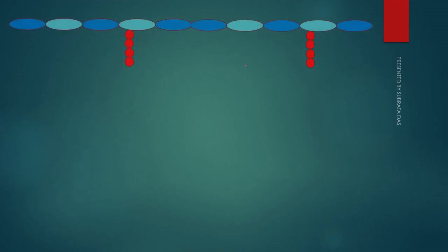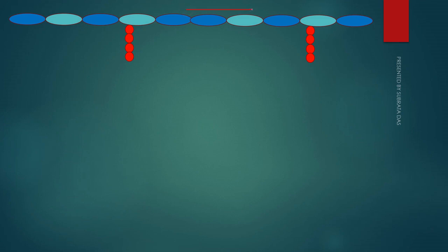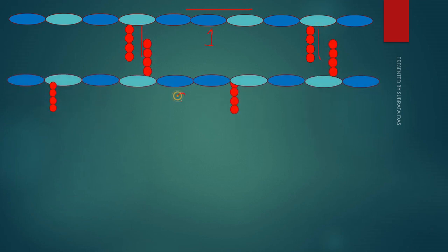Now we will see how this peptidoglycan layer gives a rigid structure to the cell wall. This is the first peptidoglycan layer with the tetrapeptides, and this is the second peptidoglycan layer. The cross-linking is done by the tetrapeptides through the pentaglycine bridge.